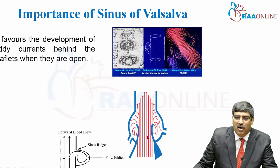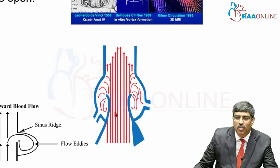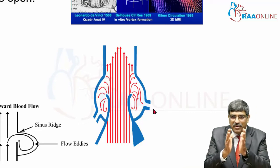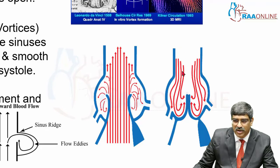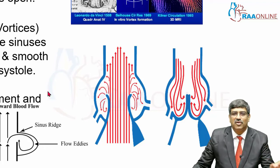When the aortic leaflets are open and blood flows from the left ventricle into the aorta, the Sinus of Valsalva creates an aortic current — here you can see blood being pushed into the coronary arteries via these two coronary artery origins. This happens during systole when the aortic leaflets are open. When the aortic leaflets are closed, there is recirculating flow — the vortex formation — and even though blood flow is not forward, this vortex still maintains coronary artery patency and contributes to smooth and efficient valve closure at end systole.